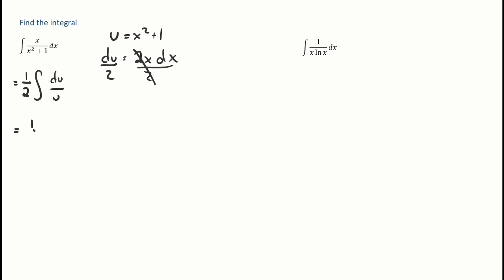Which, if you want that written a little bit different, that's 1 half times the integral of 1 over u du. Hey, what do you know? That's equal to 1 half times the natural log of u plus c. And what do we have as u? 1 half times the natural log of x squared plus 1 plus c. And there's our integral.